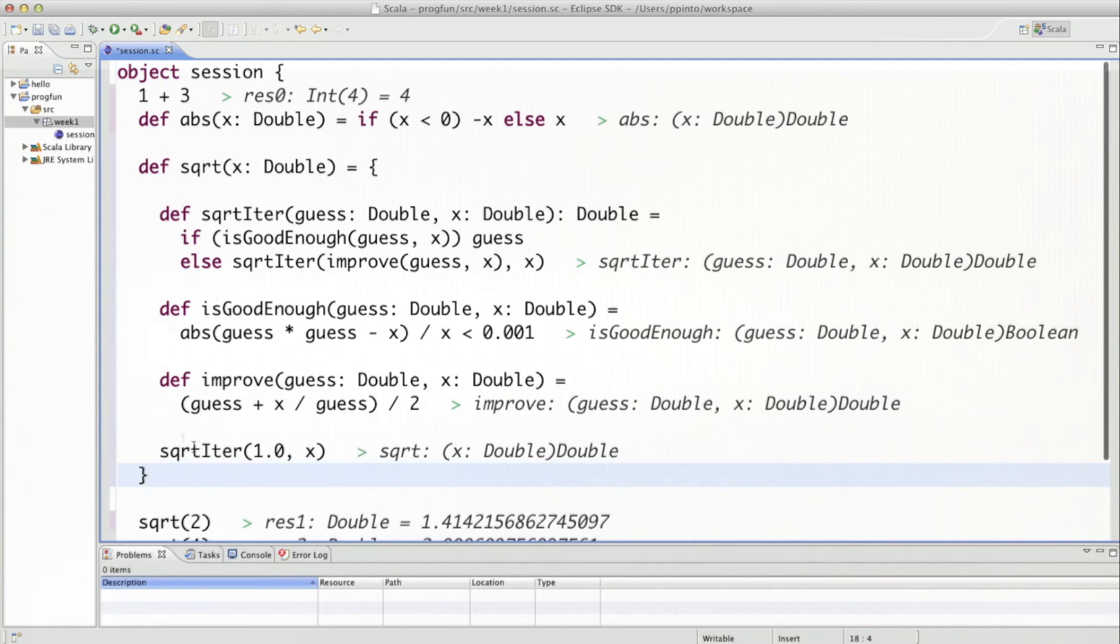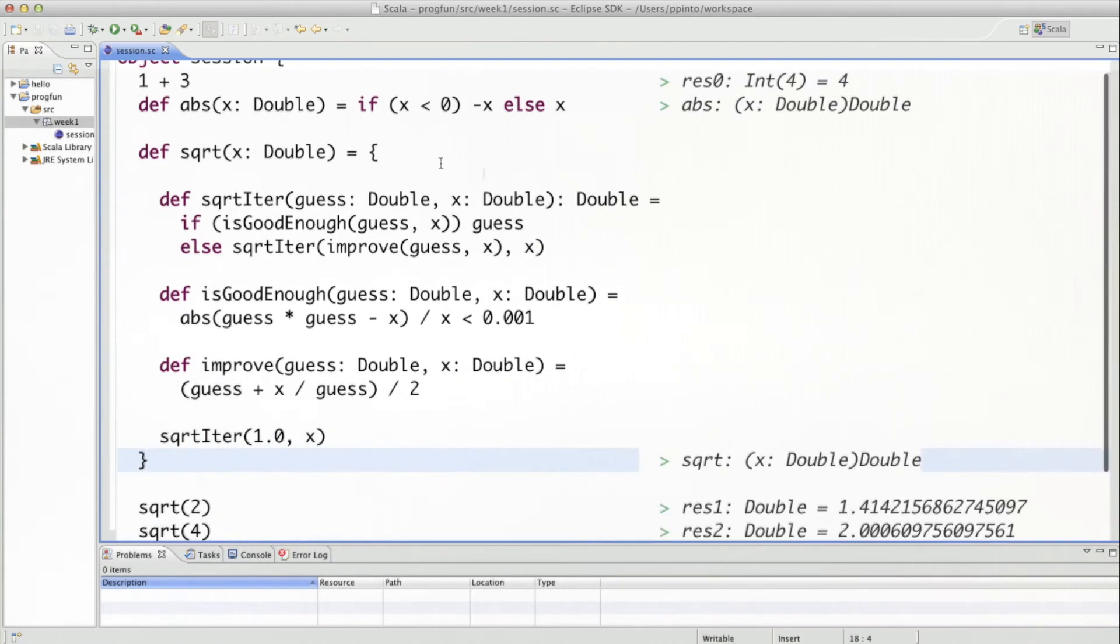So I do it like that, I reformat. And what do we see? We see the function square root that now contains square root iter, is good enough, and improve as well as the return value of square root. Return value here comes last.